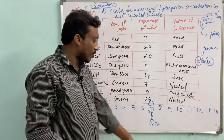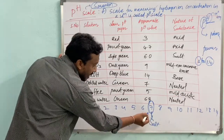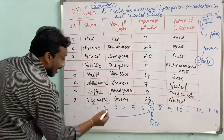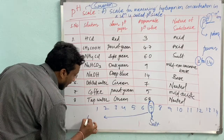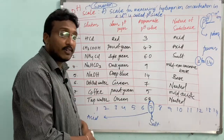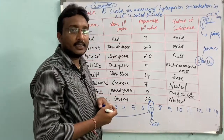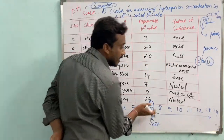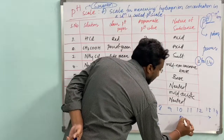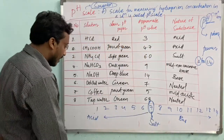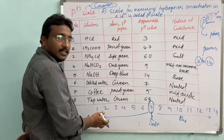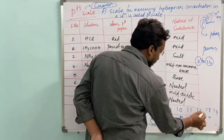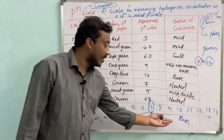If the pH value is below 7, the substance is acidic in nature. If the pH value is above 7, the substance is basic in nature.